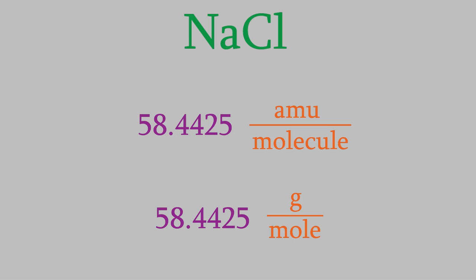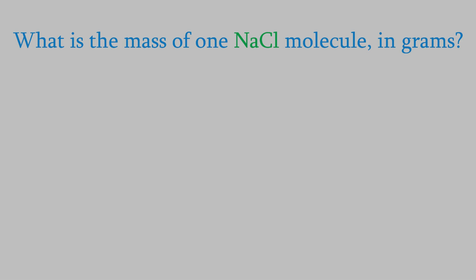So one mole of NaCl weighs 58.4425 grams. We can give the mass of NaCl as 58.4425 AMUs per molecule or 58.4425 grams per mole. Both of these are correct, and they're each useful in different situations. For example, suppose I wanted to know the mass of one NaCl molecule in grams.